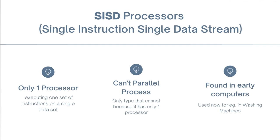We have SISD, single instruction, single data stream. There's only one processor, it can't parallel process, because it has only one processor. It was found in earlier computers. So here we only have a single instruction, and a single data stream.